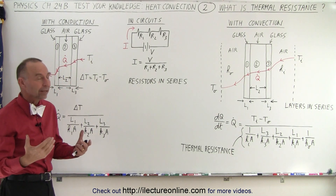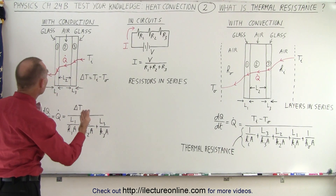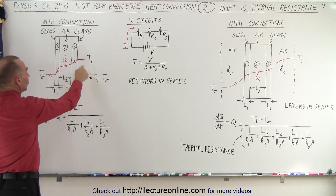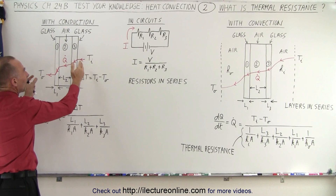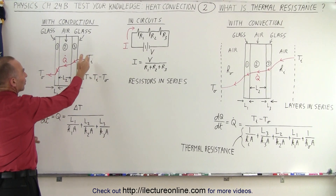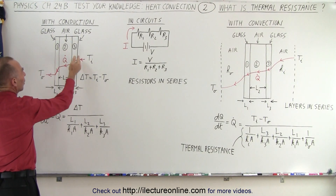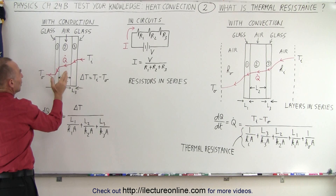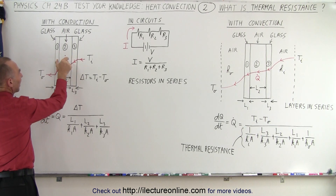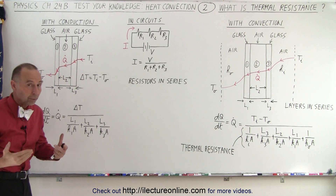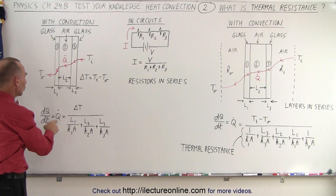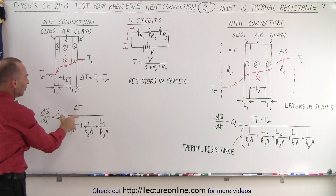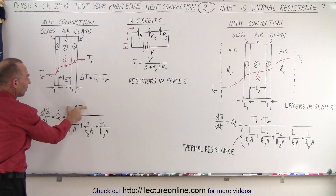So how do we compare that to heat flow? Here we have heat flow due to conduction. Notice that we did not take into account the flow of heat because of convection on either side of the window. This is a window with two panes of glass and air in between — what they call double pane windows. Notice that the equation, Q dot, the amount of heat per unit time traveling through the window, is equal to the difference in the temperature.